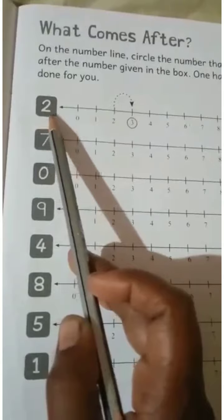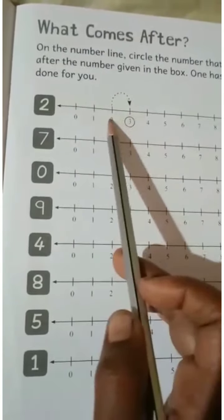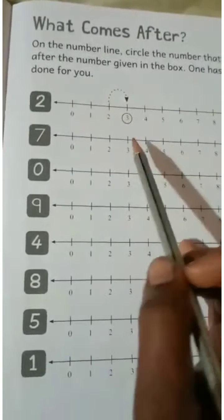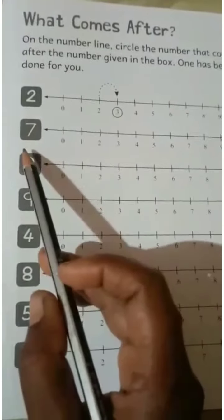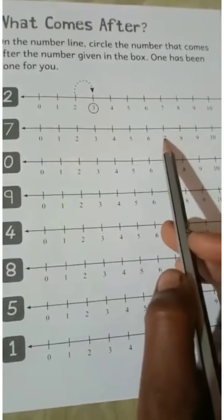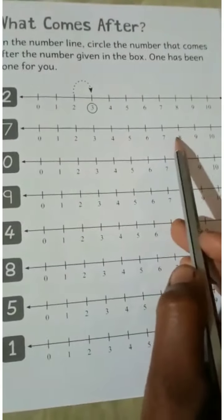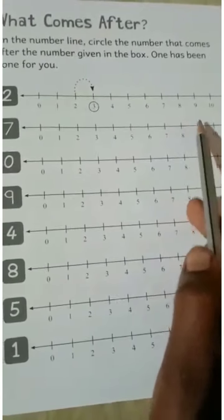Let's see the sample. Two - on the 2 line, which comes after 2? Three. Circle 3. Seven - which comes after 7? Eight. Seven after 8.